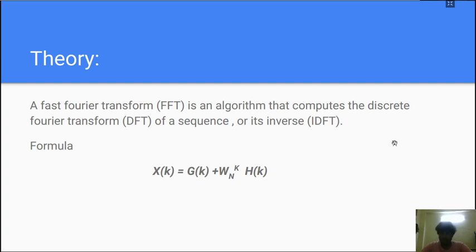In general, there are two types of FFT, which is the decimation in time for fast Fourier transform and decimation in frequency. What we are doing is we are using decimation in the time FFT.